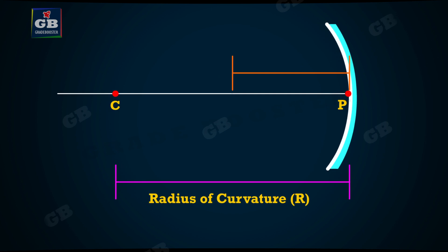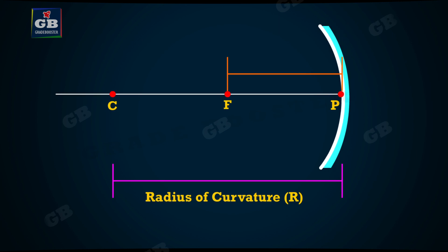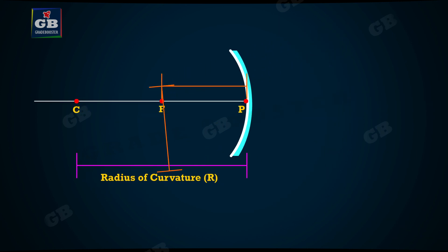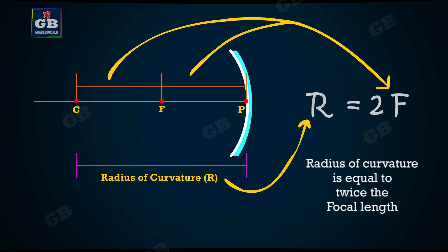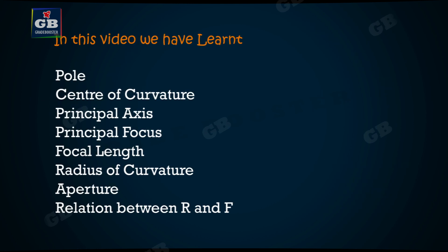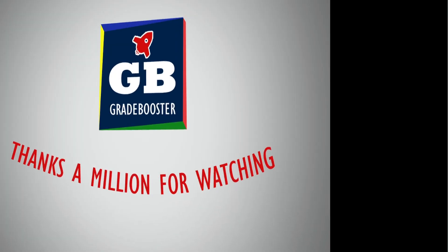There is a relationship between the radius of curvature R and focal length F of a spherical mirror. For spherical mirrors with small aperture, the radius of curvature is found to be equal to twice the focal length. We write it as R equals 2F. This implies that the principal focus of a spherical mirror lies midway between the pole and center of curvature. In this video, we have learnt about spherical mirrors. In the next video, we will see the images formed by the spherical mirrors. Thanks for watching.